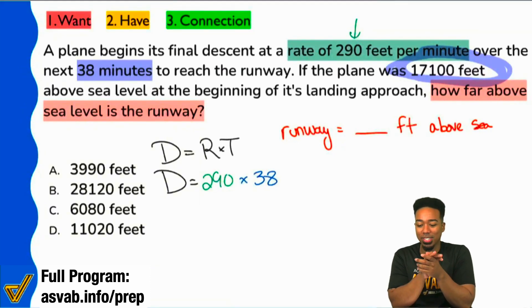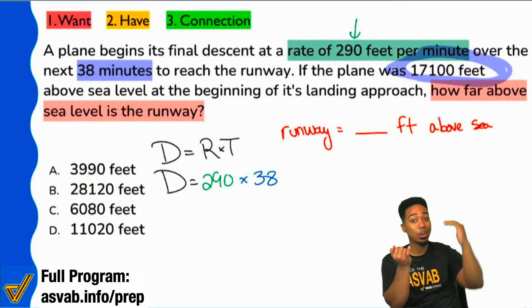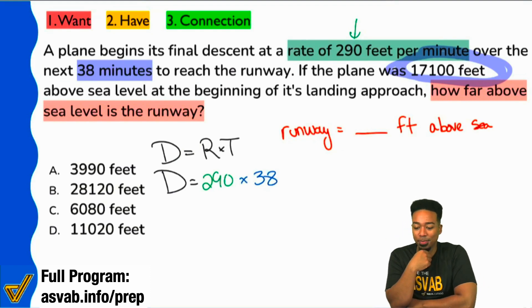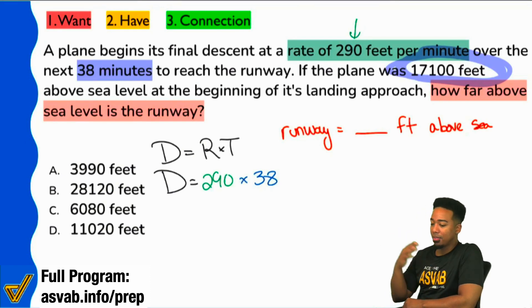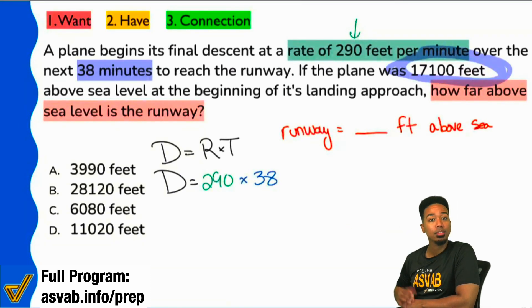Again, the phrase final descent will definitely hint that we are going down. We're subtracting. Great. Now that we know what the general game plan is, now we can feel confident to go ahead and calculate and do our best.